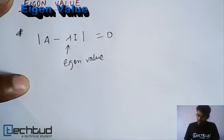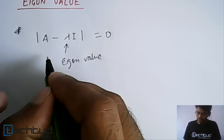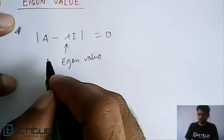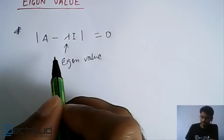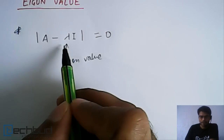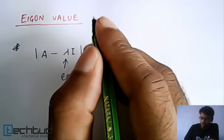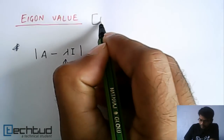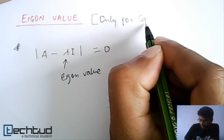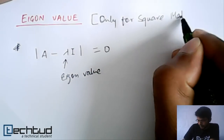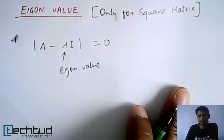One important conclusion we can draw here is that, since we are talking about the principal diagonal and subtracting lambda from each element on the principal diagonal, this Eigenvalue exists only for a square matrix.